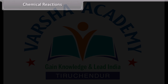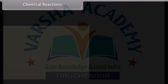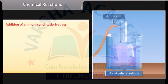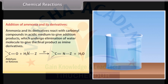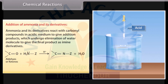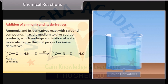Addition of ammonia and its derivatives: ammonia and its derivatives react with carbonyl compounds in acidic medium to give addition products, which undergo elimination of water molecules to give the final product as imine derivatives.